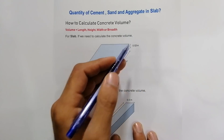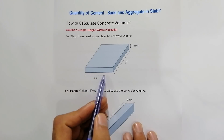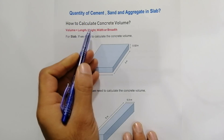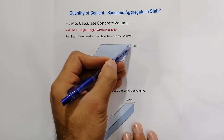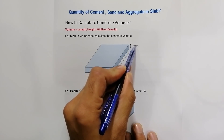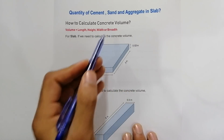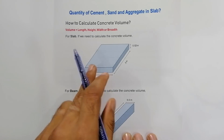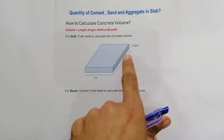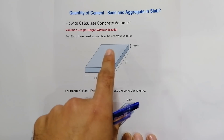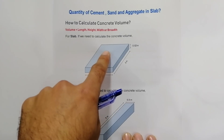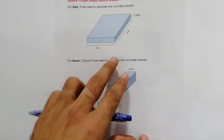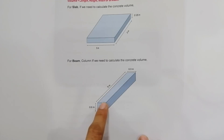For a slab, to calculate the concrete volume, you can see here: this is the length of the slab, this is the height or thickness of the slab, and this is the breadth or width of the slab. From these three dimensions we can get the volume of the RCC slab. The same approach is used for beam or column.